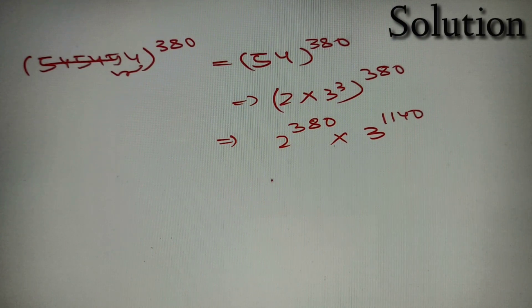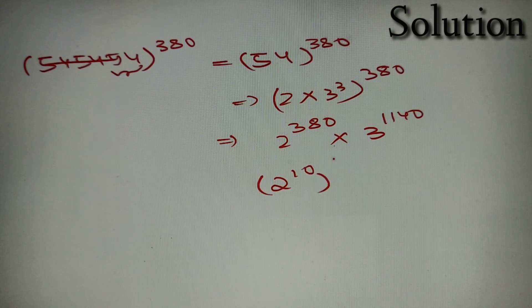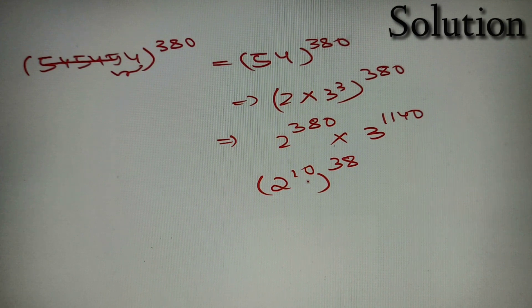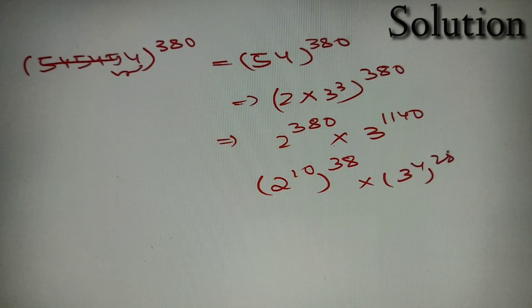Now 2 raised to power 380 can be written as 2 raised to power 10 raised to the power 38. And 3 raised to power 1140 can be written as 3 raised to power 4 raised to the power 285.